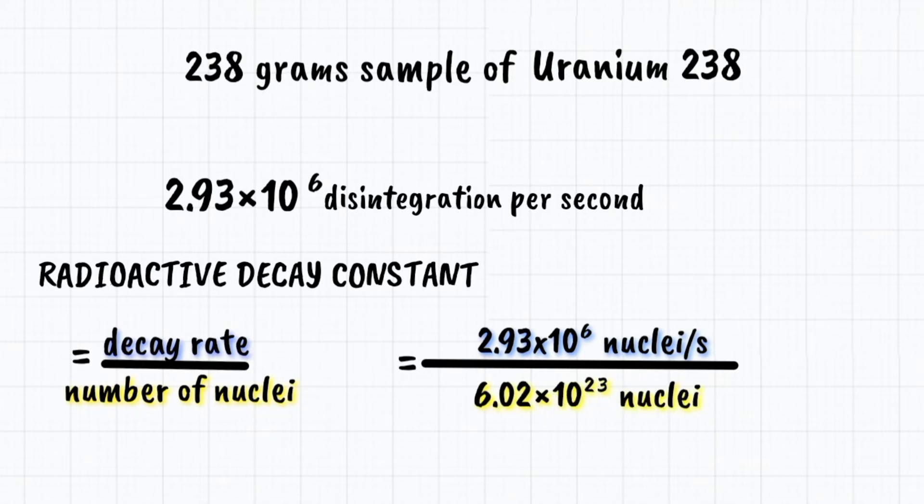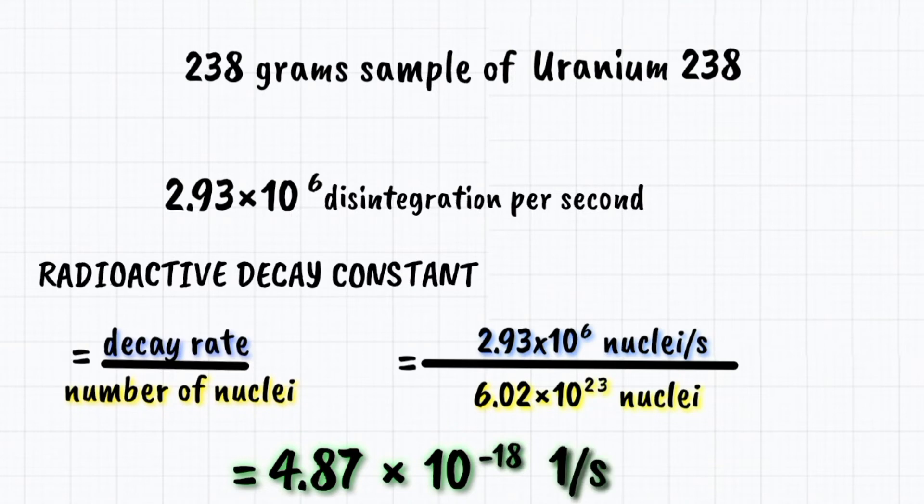Radioactive decay constant equals 4.87 times 10 to the negative 18th power per second.